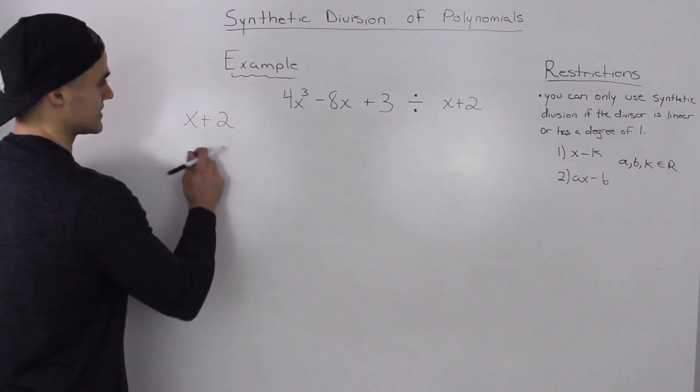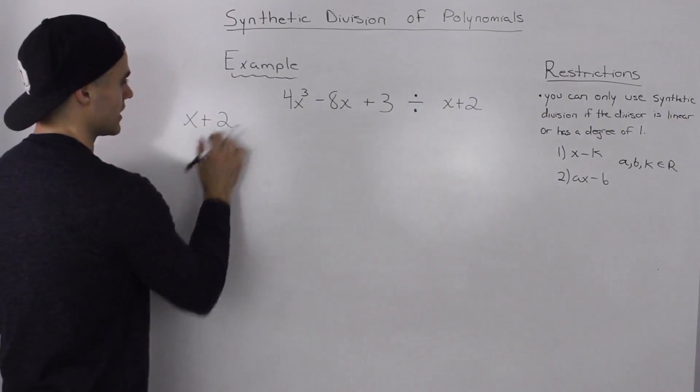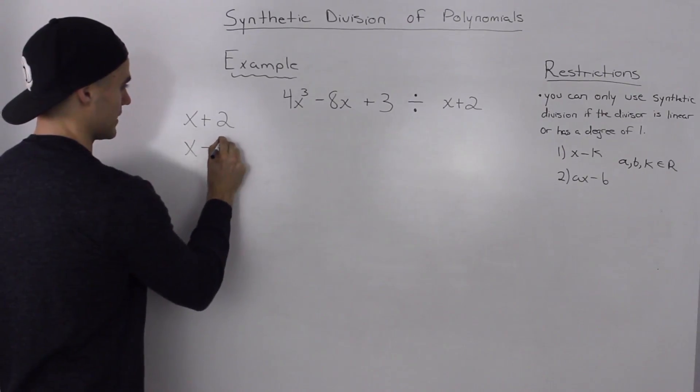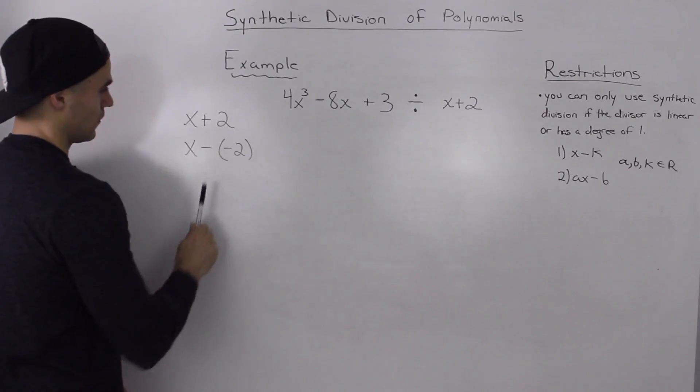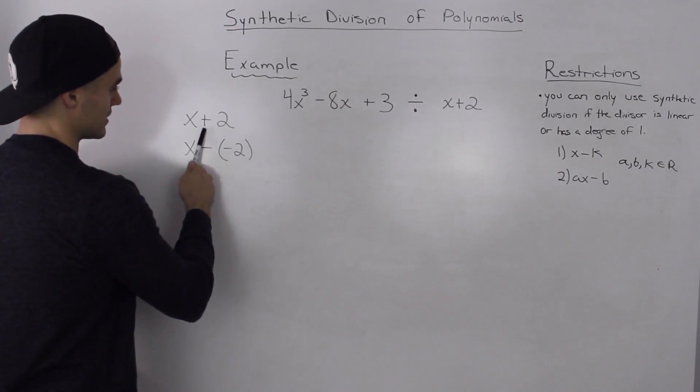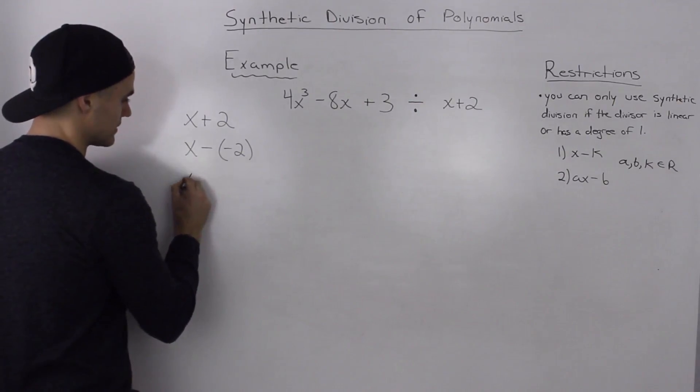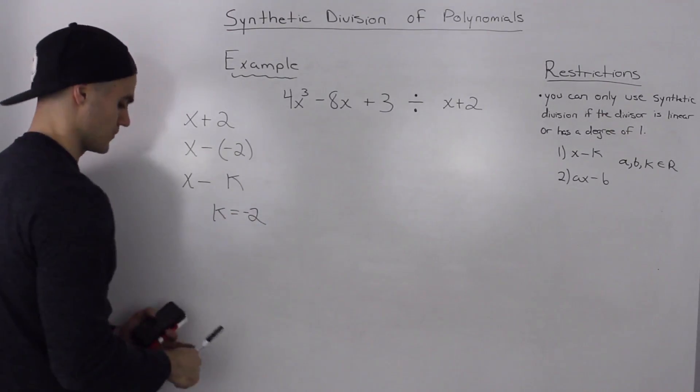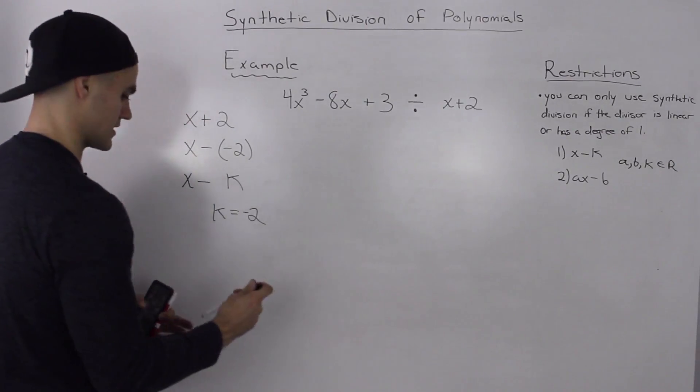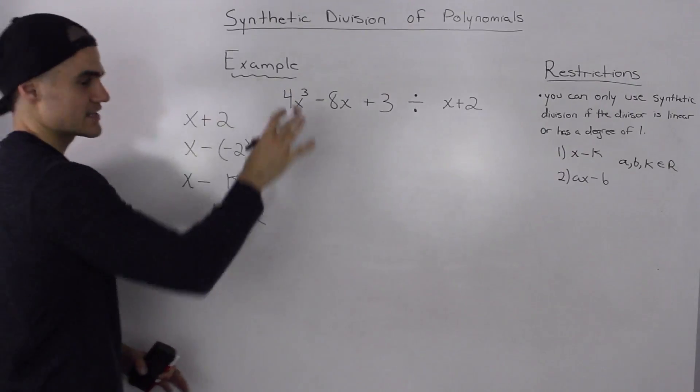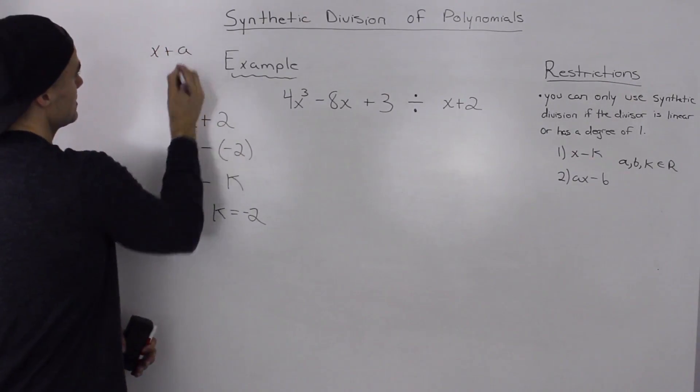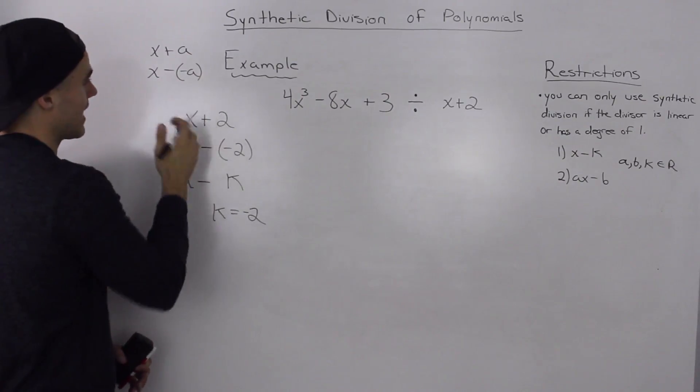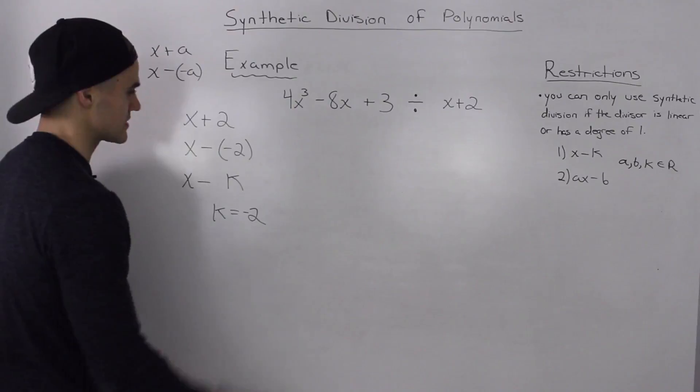Well, if you notice, it doesn't take the form of x minus k. It's x plus a number. However, if we take this divisor and manipulate it, what if we write something like x minus negative 2? Well, that's the same as x plus 2. I just took this plus and I made it into two negatives. And now it's in the form of x minus k. And our k value is negative 2. So that's one of the tricks with this question. Whenever you get a divisor with synthetic division that's x plus a constant, always change it to x minus negative of that constant. So it's in the form x minus k. And then your k value is whatever that negative a is. In this case, it's negative 2.